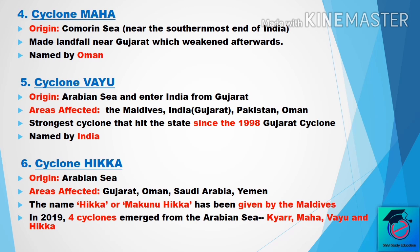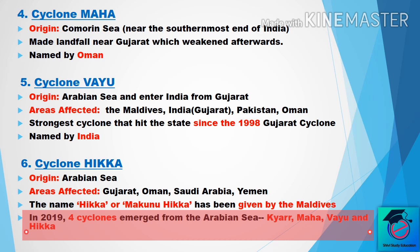An important additional point: in India in 2019, four cyclones emerged in the Arabian Sea. The four cyclone names are Kyarr, Maha, Vayu, and Hikaa. This is very important from the exam's perspective, so please note it down.